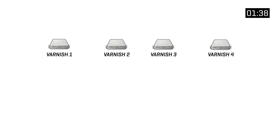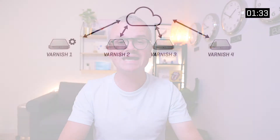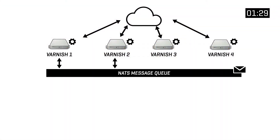Let's see how the controller is used to manage servers. It all starts with multiple Varnish servers being connected to the internet. In order to centrally manage these Varnish servers, agent software needs to be installed on the individual nodes. These agents communicate with the controller through a message queue — the NATS message queue in our case.